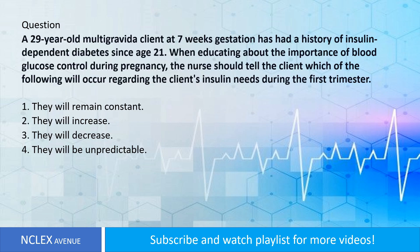Question: A 29-year-old multigravid client at seven weeks gestation has had a history of insulin-dependent diabetes since age 21. When educating about the importance of blood glucose control during pregnancy, the nurse should tell the client which of the following will occur regarding the client's insulin needs during the first trimester? One: they will remain constant. Two: they will increase. Three: they will decrease. Four: they will be unpredictable. Answer: Option three is correct.